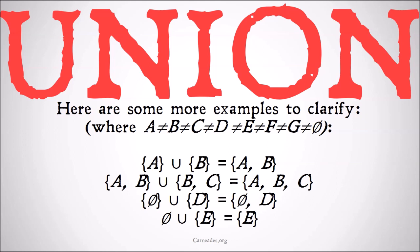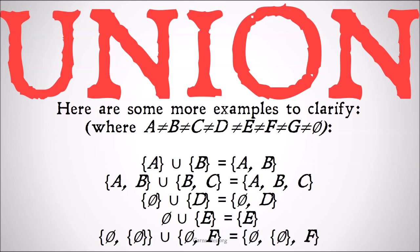But the union of the null set ∅ and the set {E} is just the set {E}, because there are no members of the null set for us to take out. And the union of the set {∅} and the set {∅, F} is the set {∅, F}.